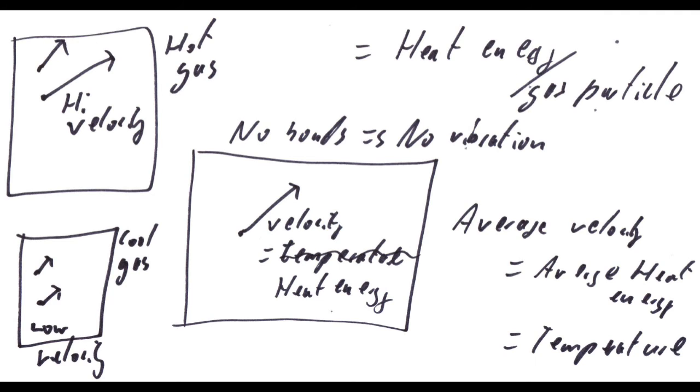Therefore, if a gas has a higher temperature than another gas, the particles in that gas are moving faster than the particles in the gas with a lower temperature. The temperature of an ideal gas is a measure of how fast the average particle is moving.